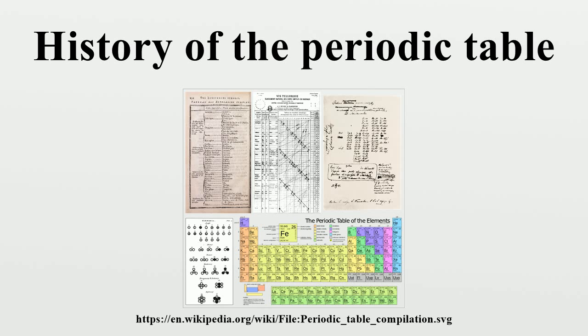The elements, if arranged according to their atomic mass, exhibit an apparent periodicity of properties. Elements which are similar as regards to their chemical properties have atomic weights which are either of nearly the same value or which increase regularly. The arrangement of the elements, or of groups of elements in the order of their atomic masses, corresponds to their so-called valencies, as well as, to some extent, to their distinctive chemical properties, as is apparent among other series in that of Li, B, B, C, N, O, and F.